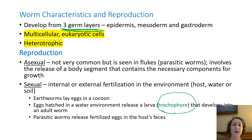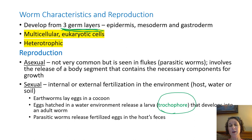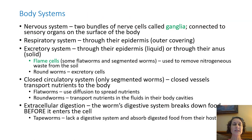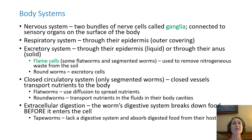Parasitic worms will normally release fertilized eggs in the host's feces. When the host goes to the bathroom, those eggs are released out into the environment, where they may or may not grow depending on where they end up. As far as body systems go, we're getting more advanced and seeing more and more systems. They are very simple compared to what we have, but for what we've talked about so far, they're pretty complex.